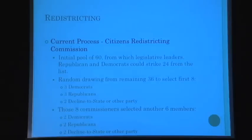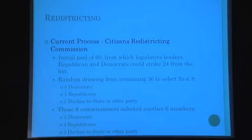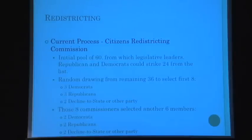The current redistricting process: there were 2,060 initial applicants. The Speaker and the President Pro Tem could throw out 24 for any reason, leaving 36, and eight were randomly selected — three Democrats, three Republicans, and two declined-to-state or minor party members. Those commissioners then selected six more — two Democrats, two Republicans, two declined-to-state or other party — for a total of 14 commissioners.